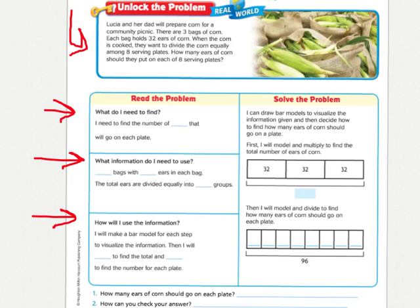So what do I need to find? It's asking me to find the number of ears of corn that will go on each plate. Eight ears of corn.